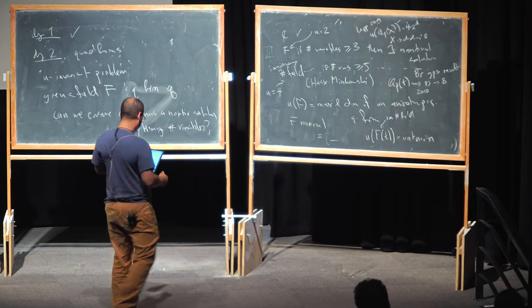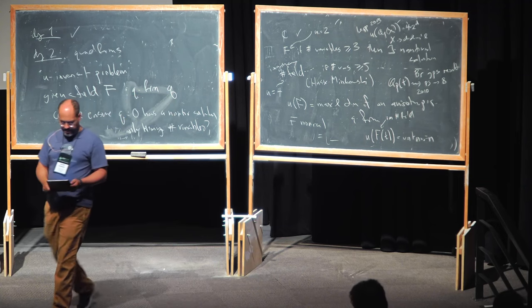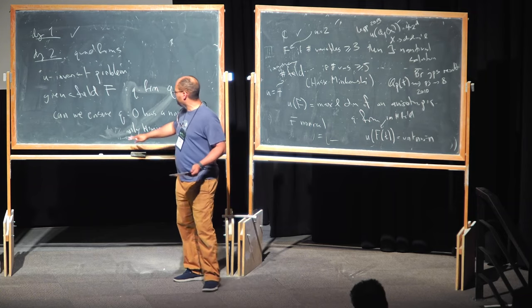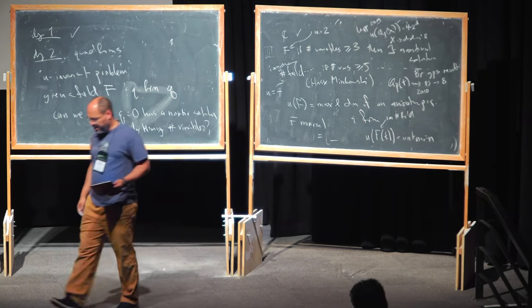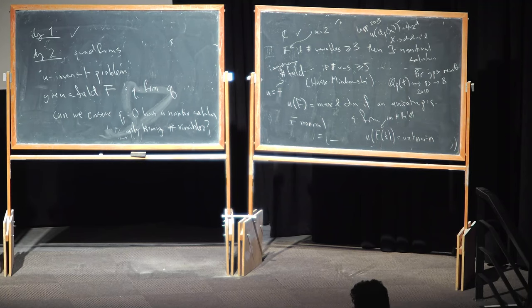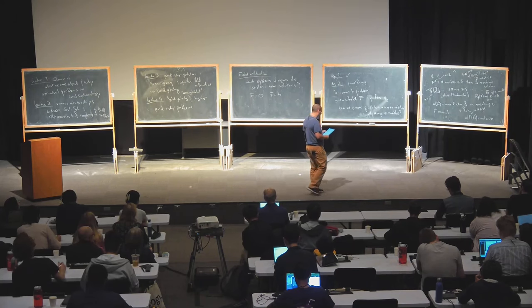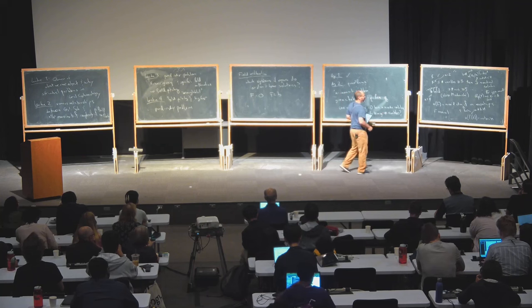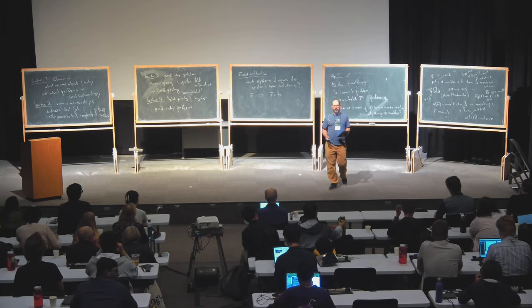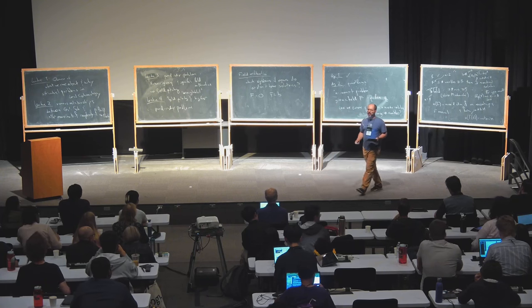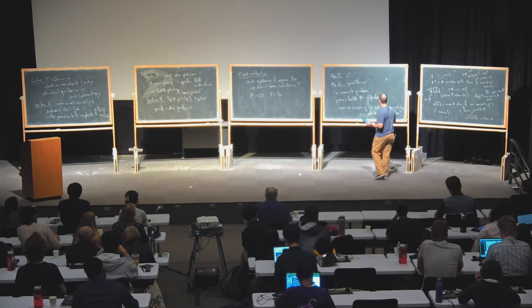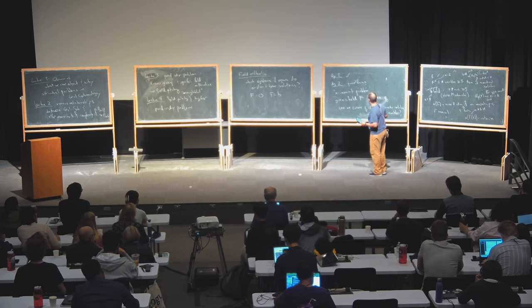So quadratic forms — just the very basic question of do you have a zero or not, and can you decide based on very little information like this — already gives a very complicated, rich answer. Besides that, you can ask more: there's more information about a quadratic form than just whether it has a zero. You might want to say how you classify them, how you tell them apart, how you parameterize ones with various properties.